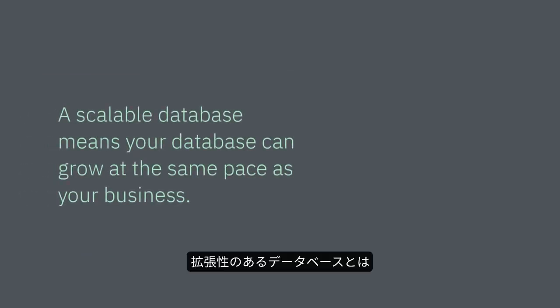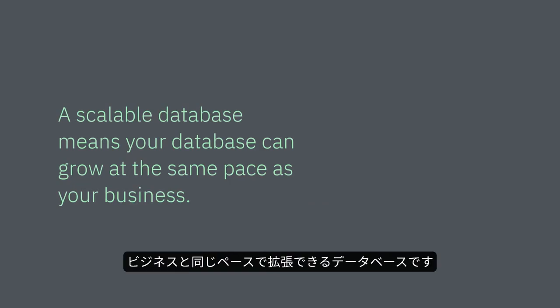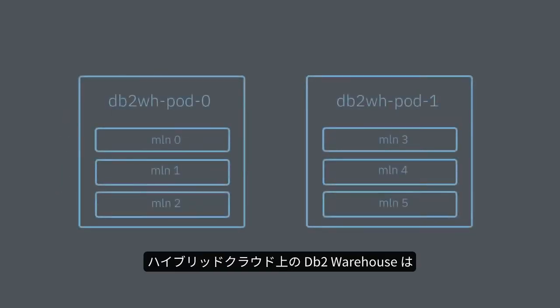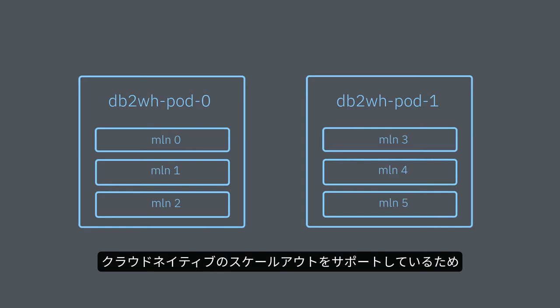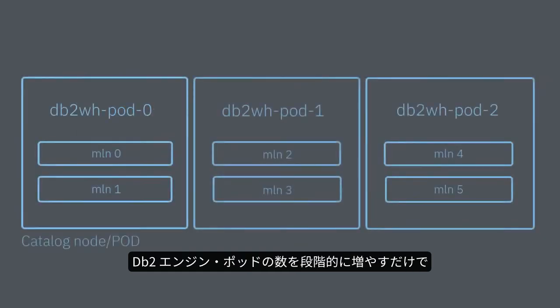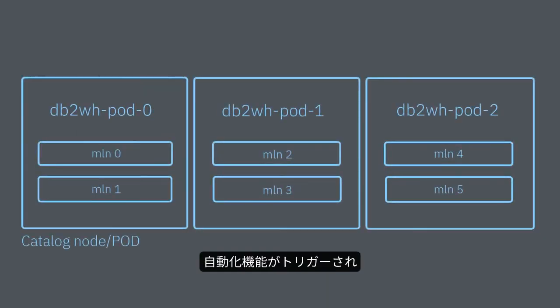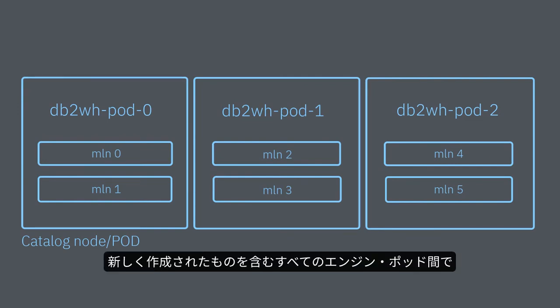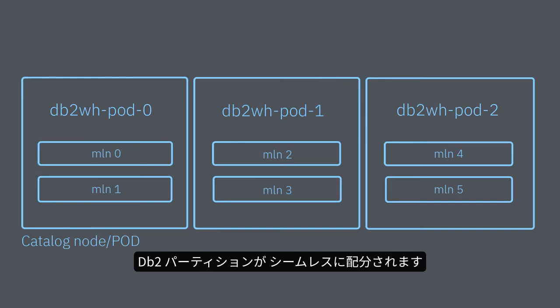A scalable database means your database can grow at the same pace as your business. DB2 Warehouse on Hybrid Cloud supports cloud-native scale-out to increase the number of compute resources on demand to complement your data growth. With Kubernetes' concept of replicas, the simple act of incrementing the number of DB2 engine pods will trigger automation to seamlessly reappropriate all the DB2 partitions amongst all engine pods, including the newly created ones.